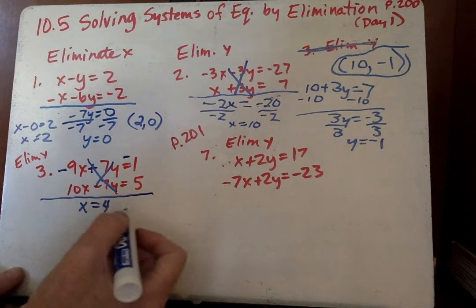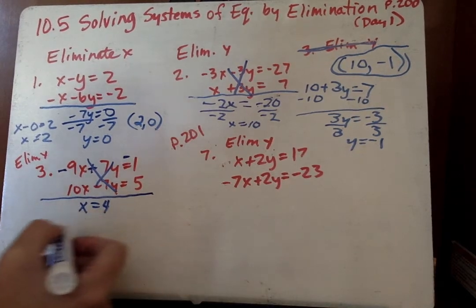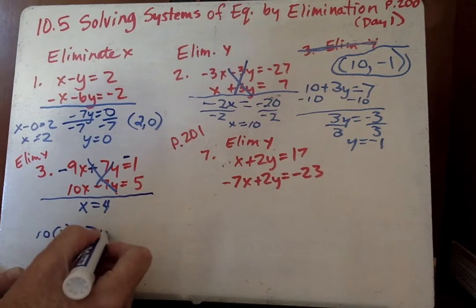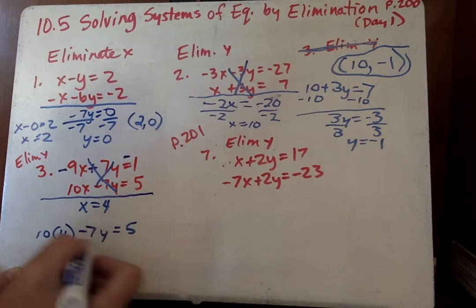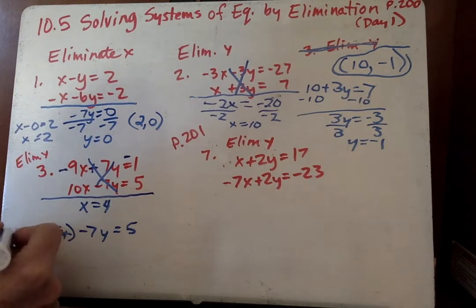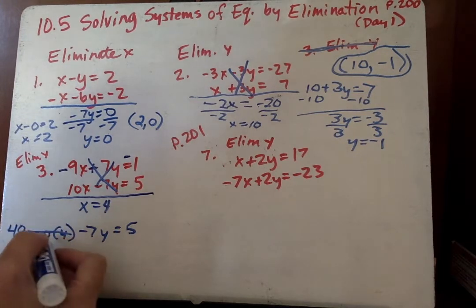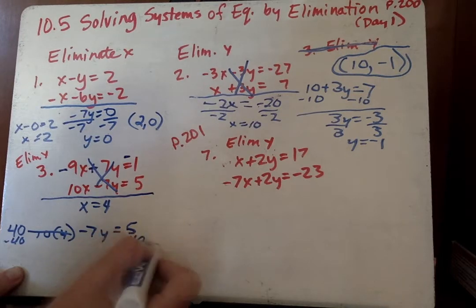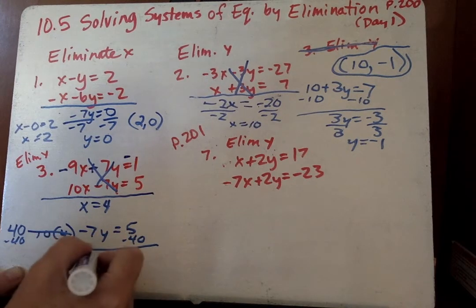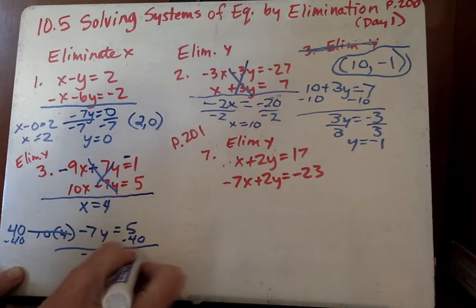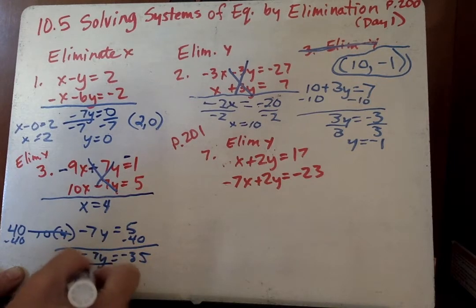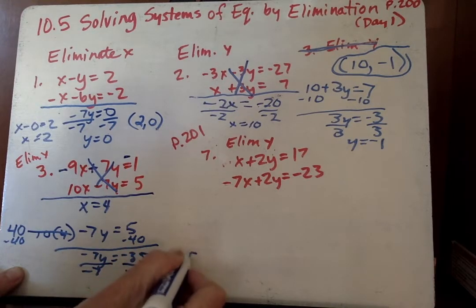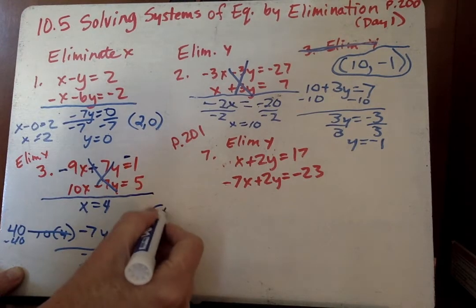So now we put that into one of the equations. I can put, let's see, 10 times 4 minus 7y equals 5. 10 times 4 is 40, so I'm going to make that 40. Now I'm going to minus 40 from this side, minus 40 from that side, and I get negative 7y equals negative 35. Divide by negative 7, y equals 5. So again, our ordered pair is 4, 5.